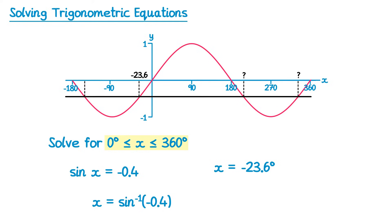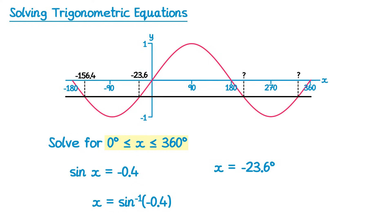We're going to find the other negative solution using symmetry. From 0 to negative 23.6 is a distance of 23.6, which must be the same distance from negative 180 to the new solution. So we do negative 180 plus 23.6, and find that this solution is negative 156.4. So we've found another solution — not one we want, but we found another one.